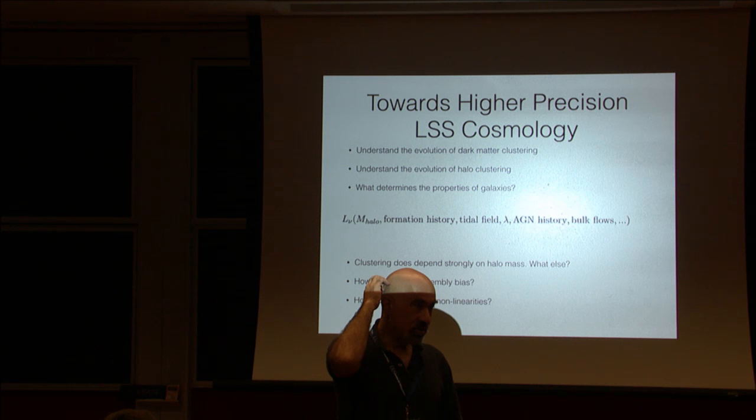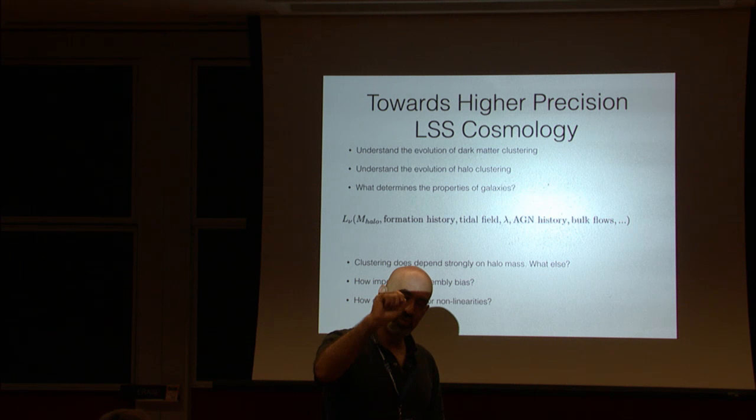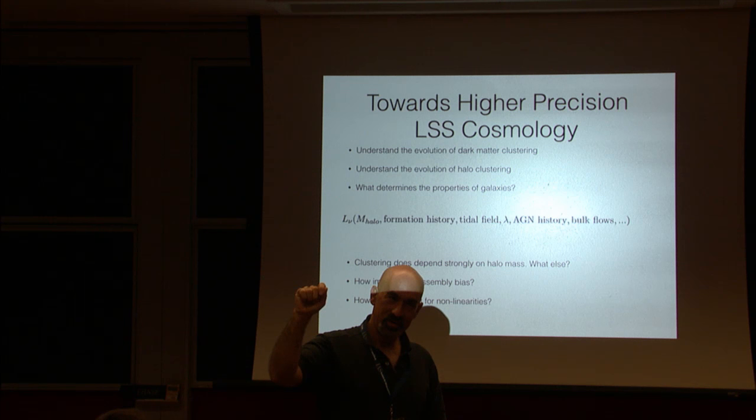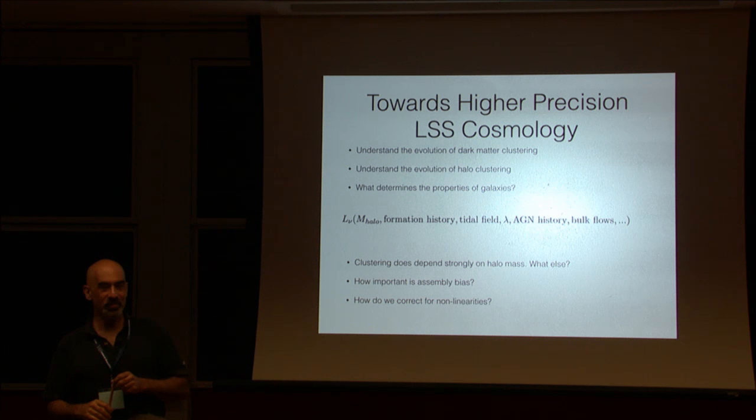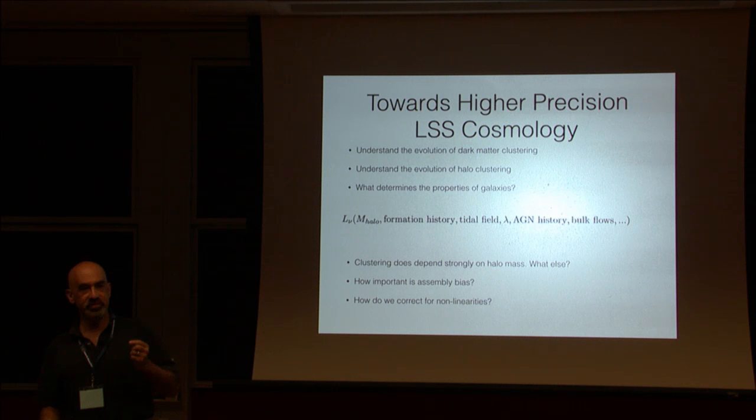The right answer isn't that the universe draws randomly from what the second-order bias terms are. There is a physical answer to what the second-order bias terms are — that is determinable. And if you just marginalize over it, you will not necessarily get the right answer. You will be biased in a way you don't understand.